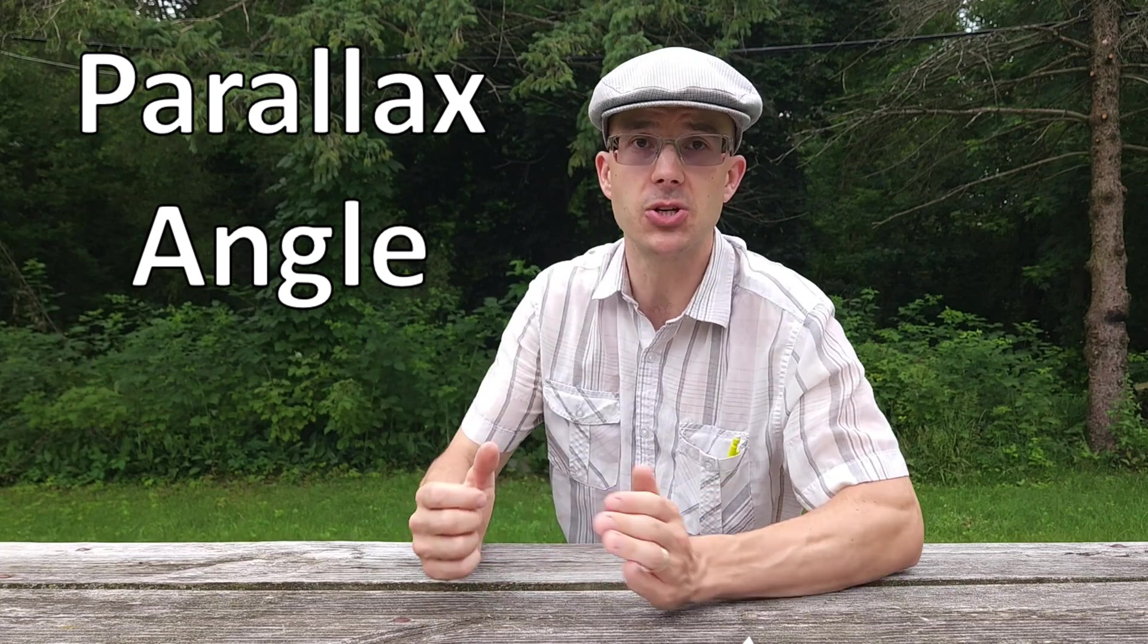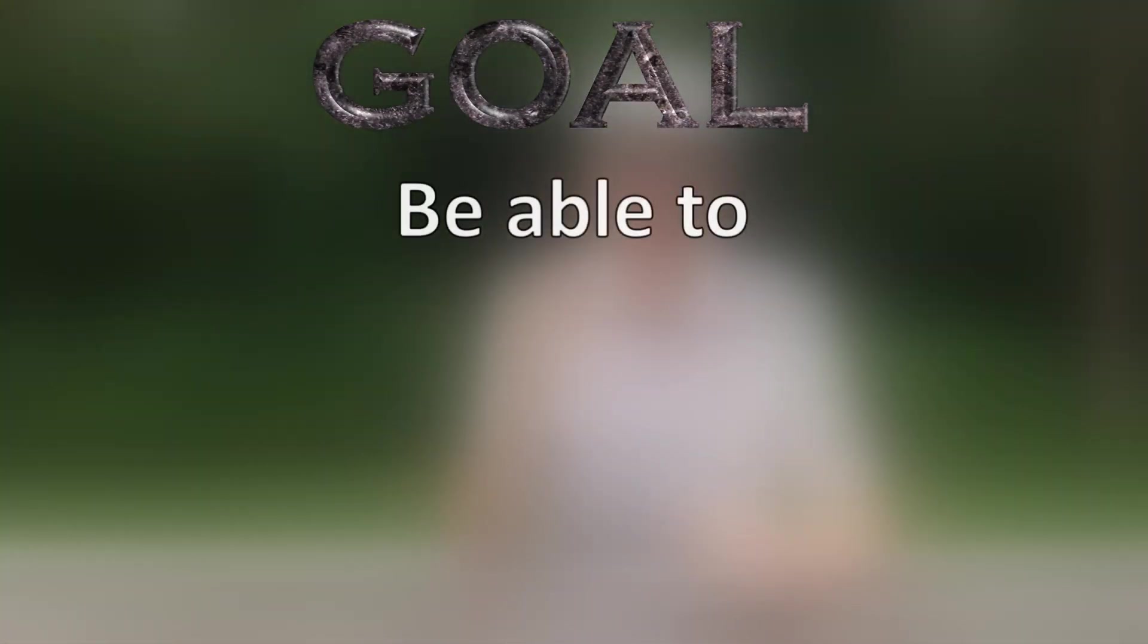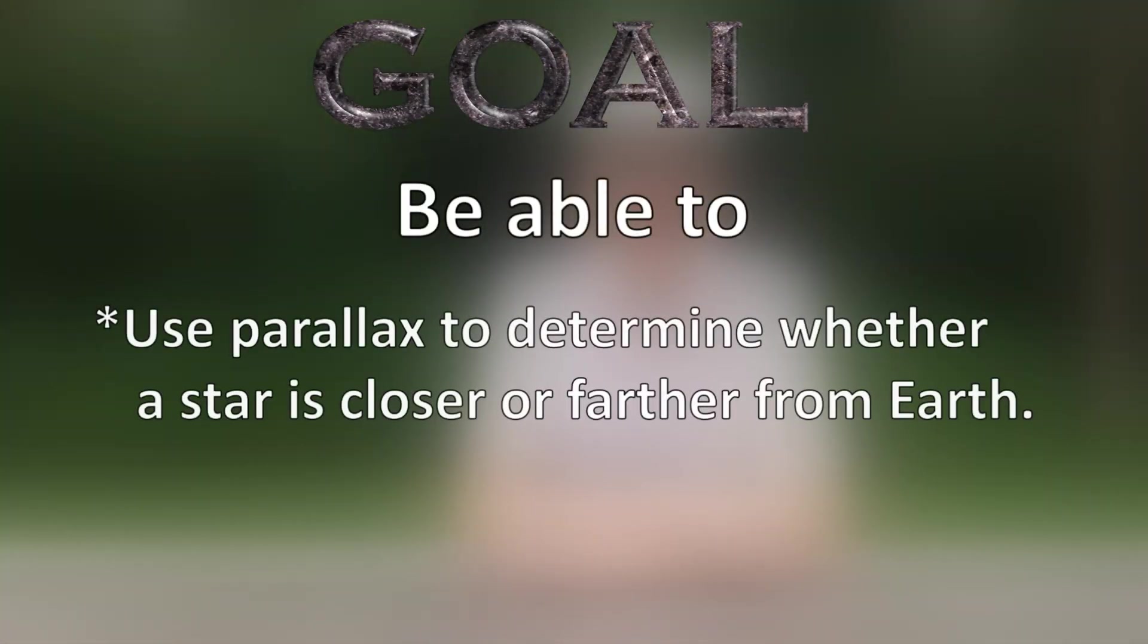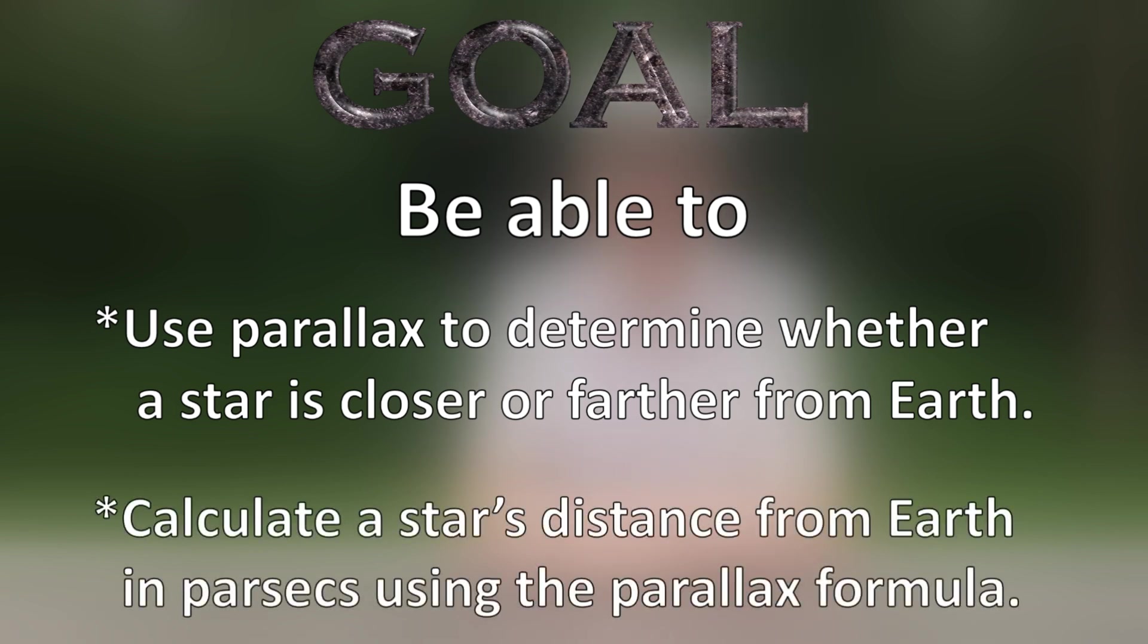The amount that your thumb appears to move is called the parallax angle, because it can be measured in degrees. Like we saw in the car ride, this is also an example of parallax. So this leads us to the goal of this video. After watching this video, you should be able to use parallax to determine whether a star is closer or farther from Earth, and calculate a star's distance from Earth in parsecs using the parallax formula.